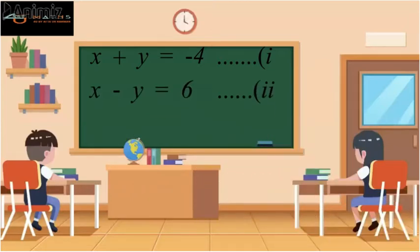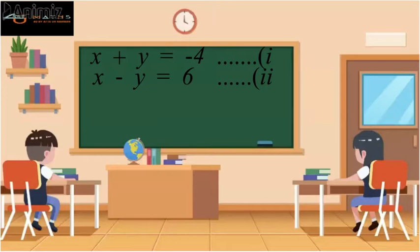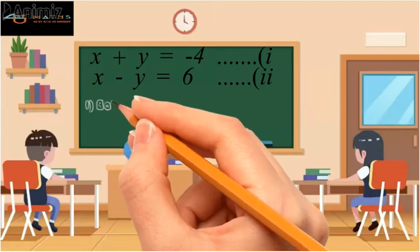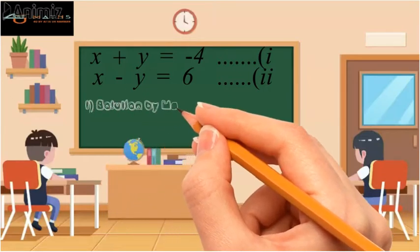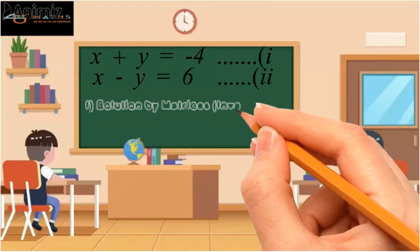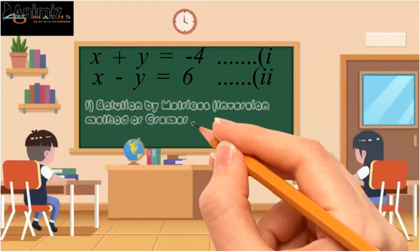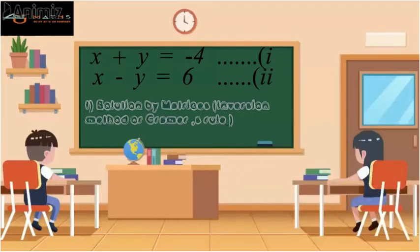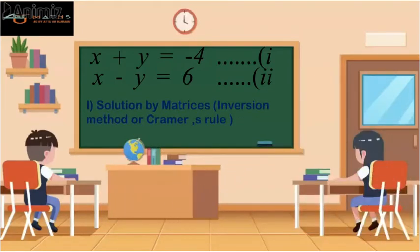As these are simultaneous equations, we can solve them by either of the following three methods. The first method is to solve the given equations by matrices, that is by using the inversion method or Cramer's rule.